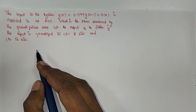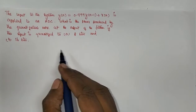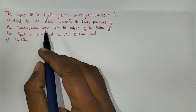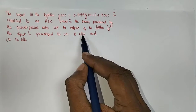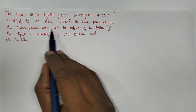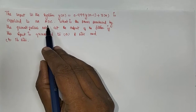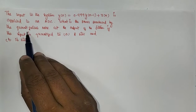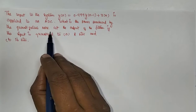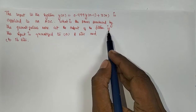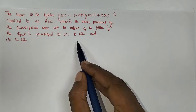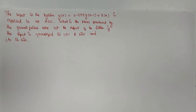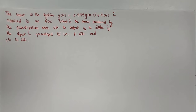Hello viewers, welcome to the DSP playlist lecture series. In this video lecture we are going to see how to find the quantization noise power due to ADC — that is, while converting analog to digital, what is the finite word length effect, i.e., quantization noise at the output of a filter if the input is quantized to 8 bits and 16 bits. This is a simple university problem.